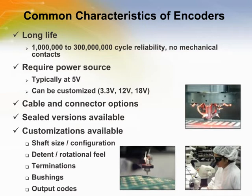Common characteristics of the Greyhill optical encoders are very high life ratings, typically 1 million to 300 million cycles. This is because they do not use mechanical contacts that tend to wear out over time. They are also active devices that require a power source, typically 5 volts, but Greyhill can customize the operating voltage if required. The majority are available with standard connector and cable options.